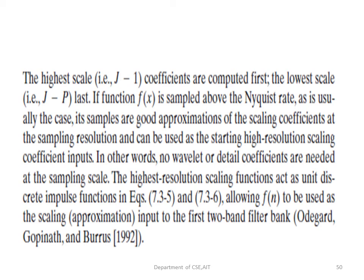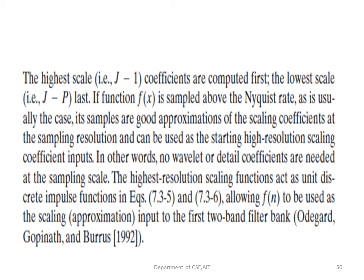If f(x) is sampled above the Nyquist rate, its samples will be good approximations of the scaling coefficients at the sampling resolution and can be used as the starting high-resolution scaling coefficient inputs — no wavelet or detail coefficients are needed at the sampling scale. The highest resolution scaling functions act as unit discrete impulse functions, allowing f(n) to be used as a scaling input to the first two-band filter bank. This concludes our coverage of multi-resolution analysis, the fast wavelet transform, and the one-dimensional transform. We will continue in the next class.